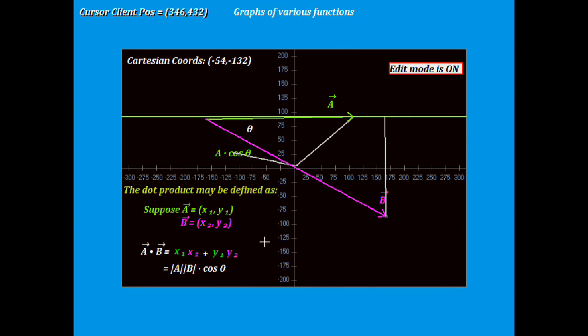What I'd like to show you is that instead of starting with this as the definition, we can start with the idea of projection - that the dot product is the projection of one vector along another times the magnitude. Take that as the definition and prove the other formula.